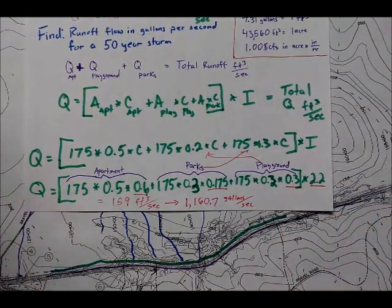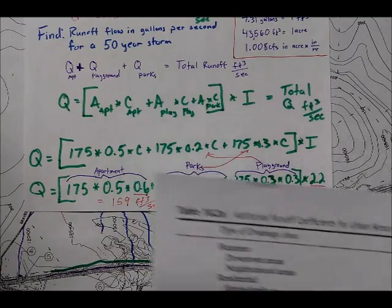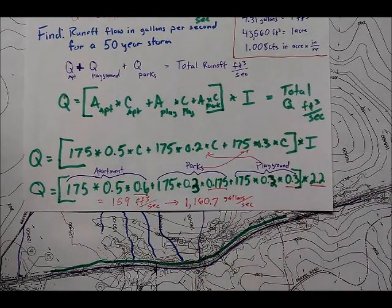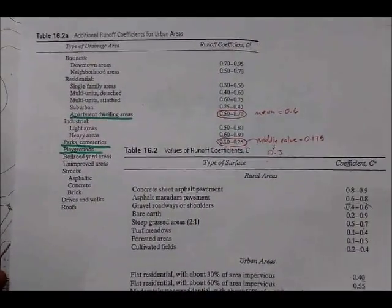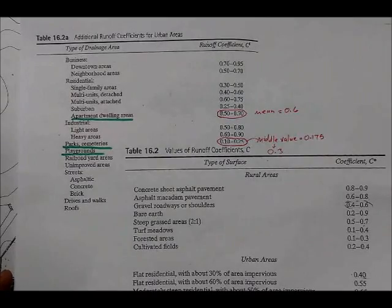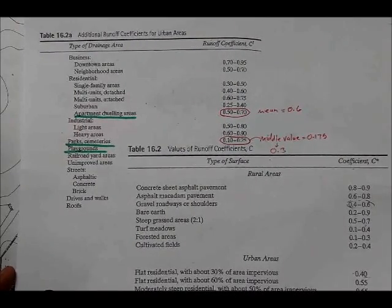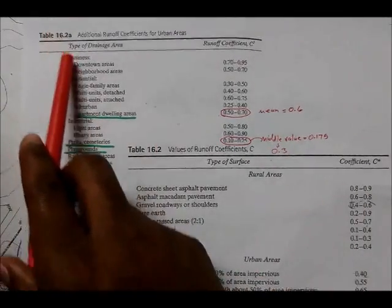Now you may be wondering where I may have gotten some of these terms from so let me show you. Let's start off with the coefficients first. The coefficients that we found here, here, and here. Now the coefficients can be found in many different types of charts. This just happens to be one of the charts and tables that is in the textbook that we're using. So from this table, 16.2a, we were able to locate the runoff coefficients for the apartment dwellings.